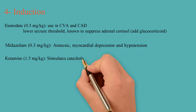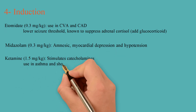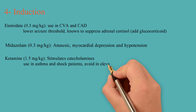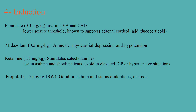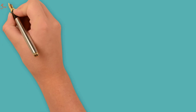Our third agent is ketamine, which stimulates catecholamines, making it the preferred agent in asthma and shock situations, but it should be avoided with elevated intracranial pressure or hypertensive crisis. The fourth agent is propofol — best used in asthma and status epilepticus, but be careful as it can cause hypotension. Ketamine and propofol share the same dose of 1.5 mg per kg. Dosing for induction agents is based on total body weight, except for propofol, where ideal body weight should be used.